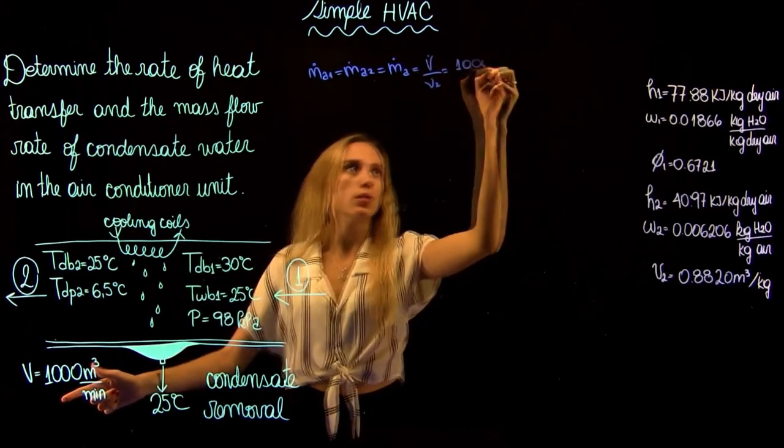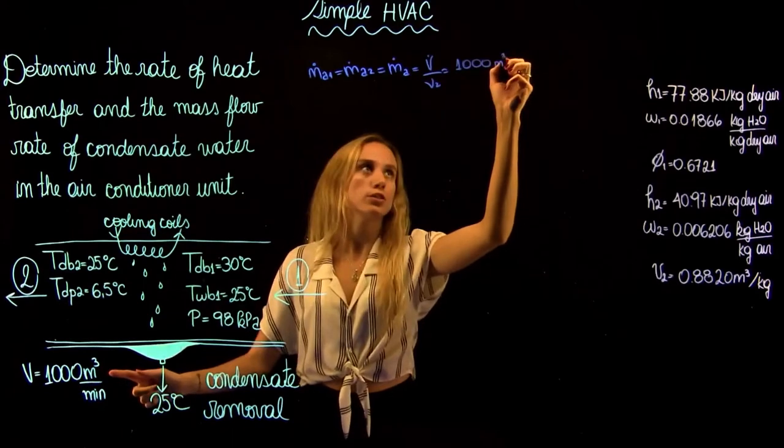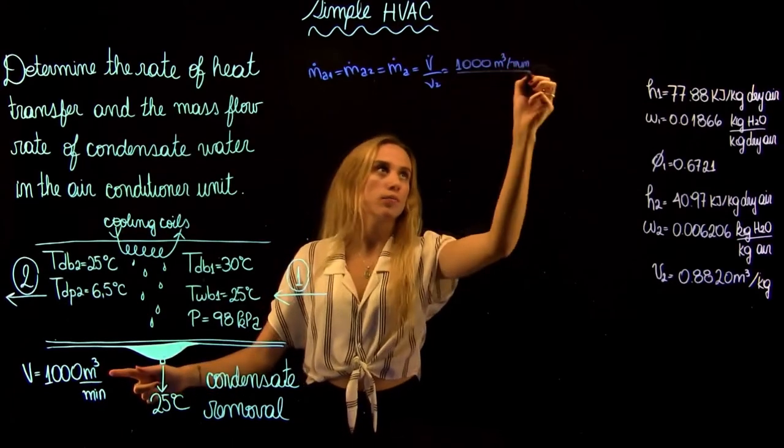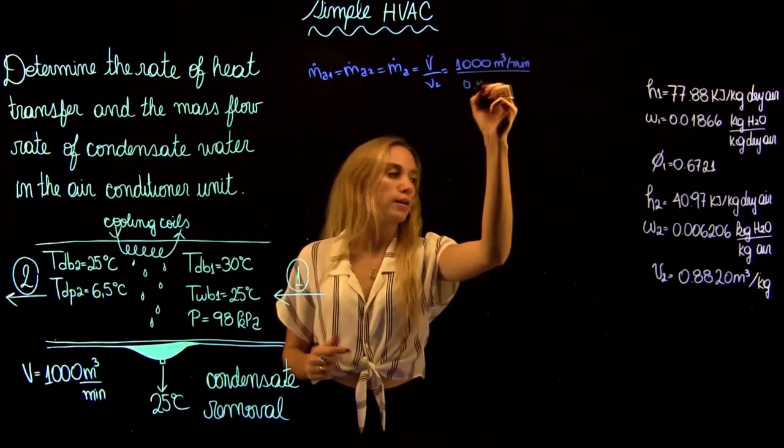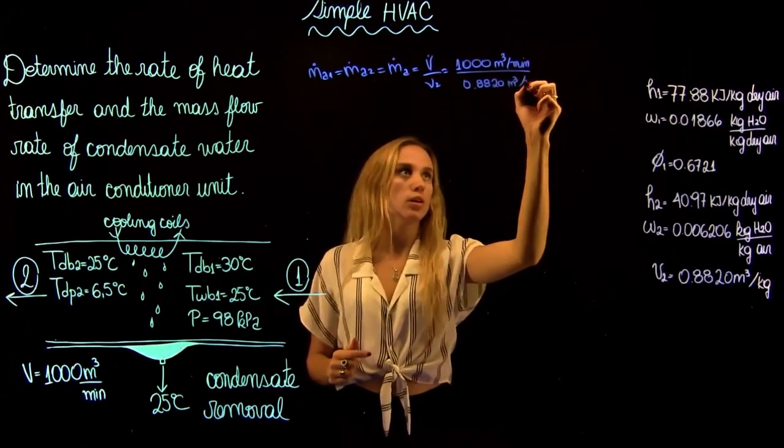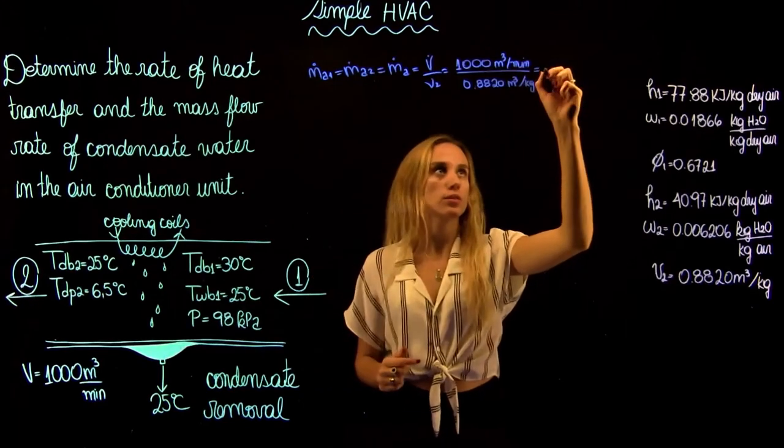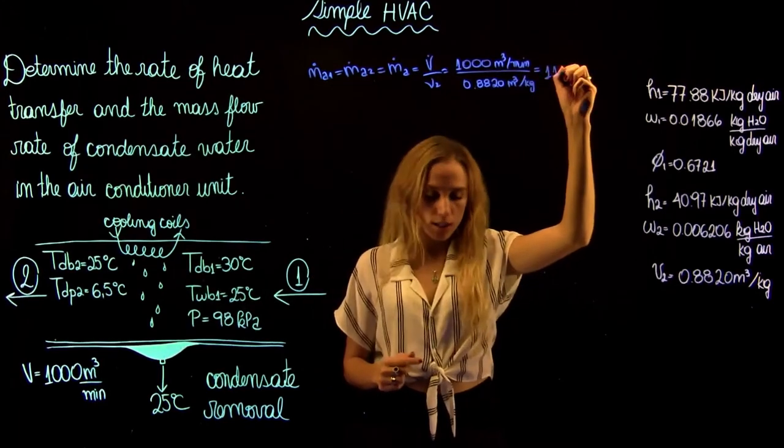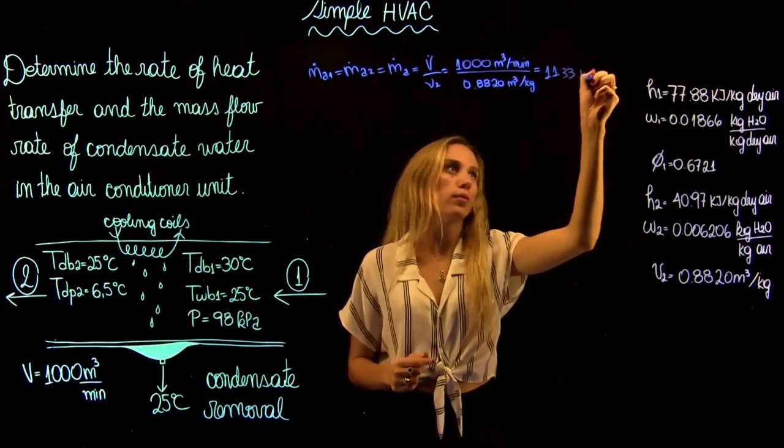We can find this by using the flow rate over the specific volume. It's going to be 1,000 meters cubed per minute over 0.8820 meters cubed per kilogram, and we're going to find this is equal to 1133 kilograms per minute.